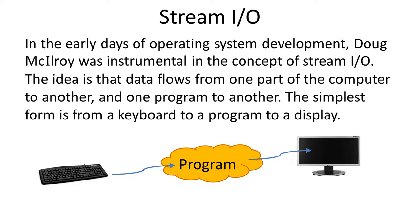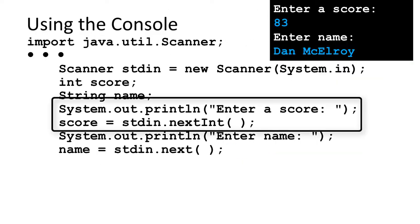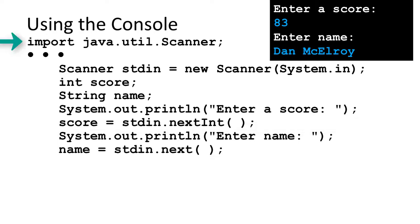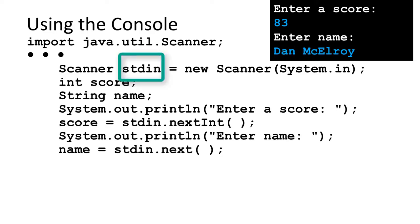The simplest form is from a keyboard to a program to a display. Here is some code that displays a prompt message and then reads an integer score from the keyboard, then another prompt message to enter a Java string to read a name. The top of the program needs import java.util.Scanner. The body of the program needs to create a Scanner object, named stdin,